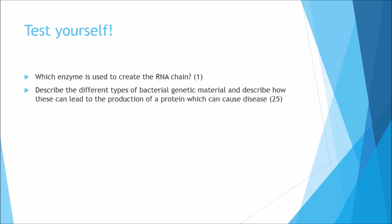We've reached the test section — it's been a short video but it's covered quite a bit of content. Two questions: for one mark, which enzyme is used to create the RNA chain? And for 25 marks, describe the different types of bacterial genetic material and describe how these can lead to the production of a protein which can cause disease. Thank you for watching — I hope you've learnt something new. Peace out!